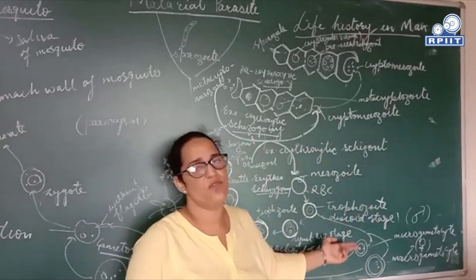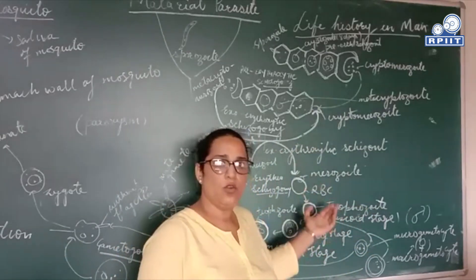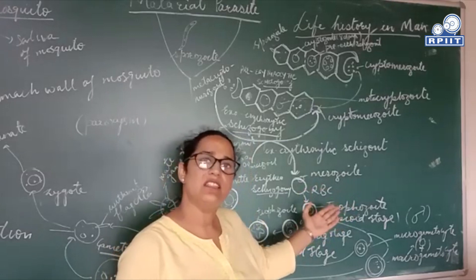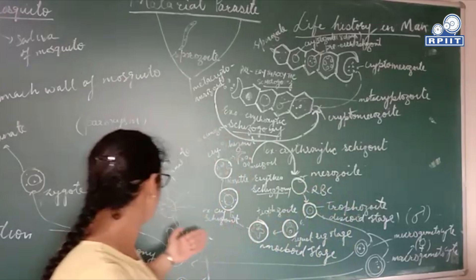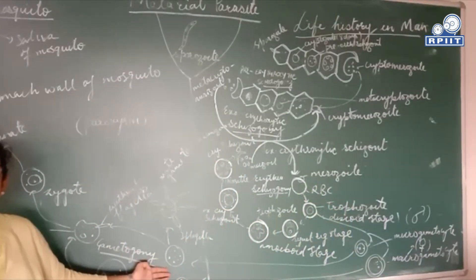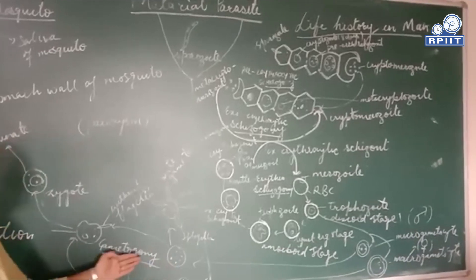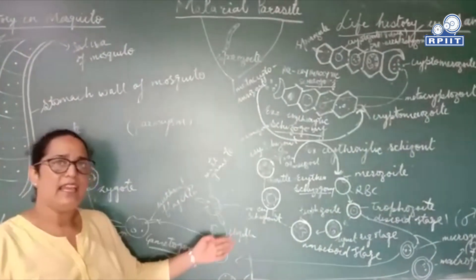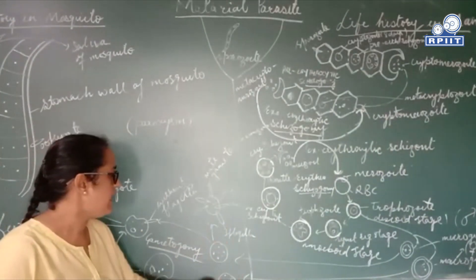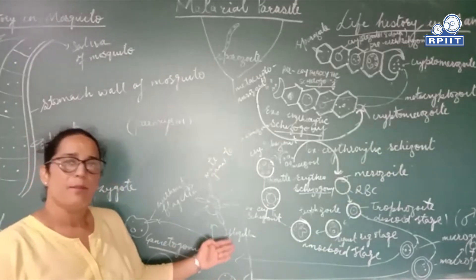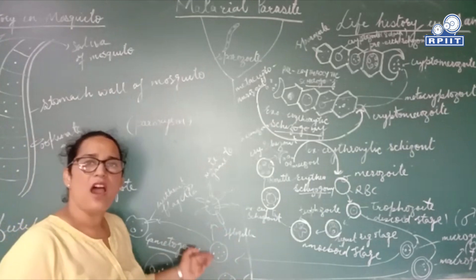At this stage, the person is very infective. After the parasite enters the mosquito, it will start its sexual life there. The sexual phase in the mosquito is called gametogony. This sexual life occurs in the mosquito because the mosquito is now infected with the malarial parasite.